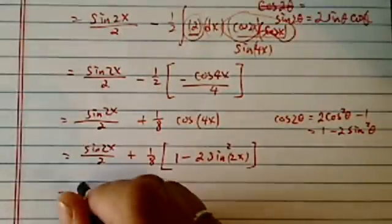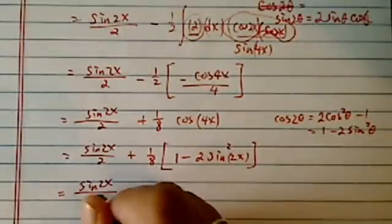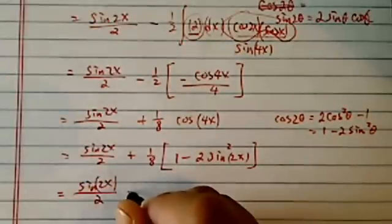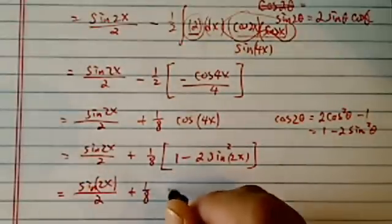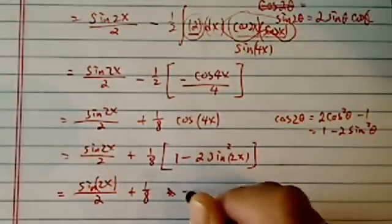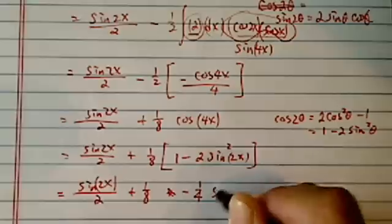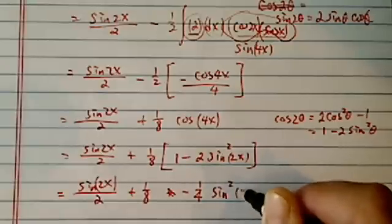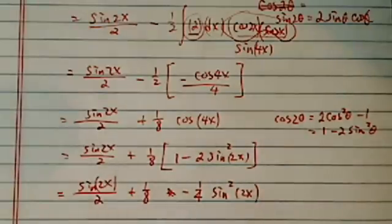And I expanded everything out. I have a sine of 2x over 2. I have plus 1 eighth and then it's minus 1 quarter of sine squared of 2x. So it's a quarter of sine squared of 2x plus 1 eighth.